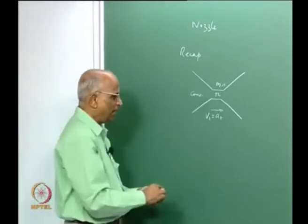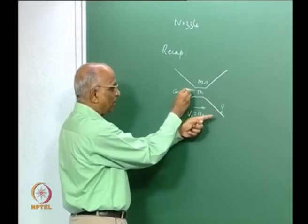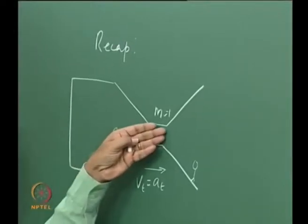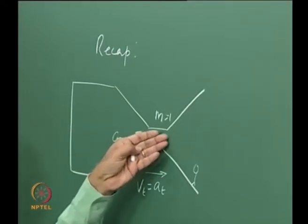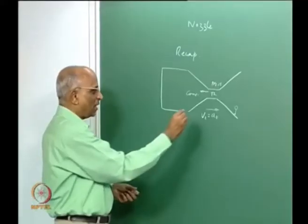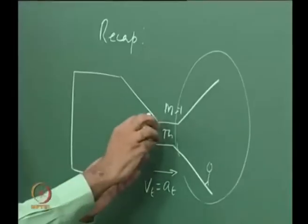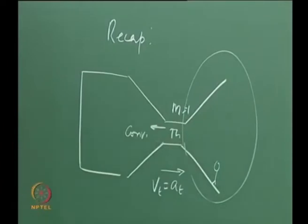We also told ourselves: any disturbance — suppose I stand on the nozzle and make a loud noise — this disturbance cannot enter the convergent and therefore the chamber. The reason being the velocity at the throat is equal to the velocity of sound, and any disturbance generated downstream cannot travel upstream because the speed here is sonic. Therefore, the sonic throat essentially decouples the convergent and the chamber from the downstream portion, because disturbances travel at the sound speed.